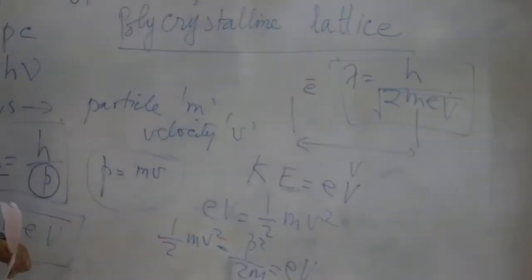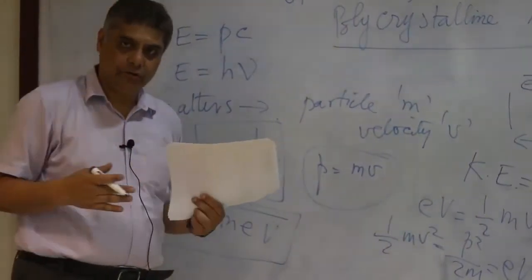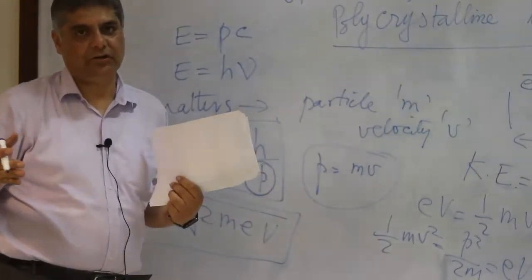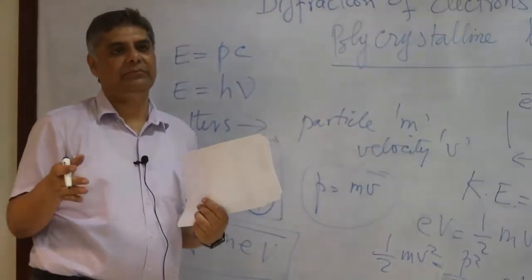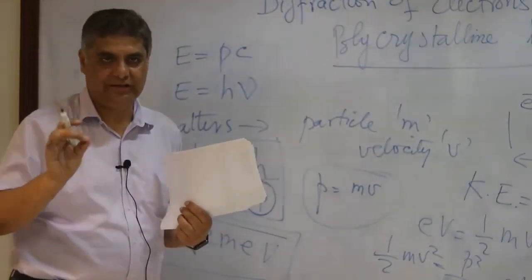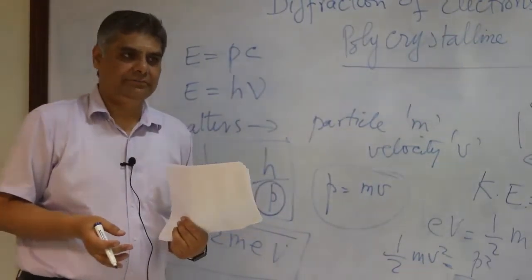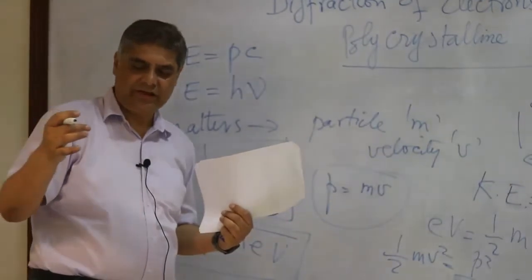This is one part of the experiment. We have a cathode ray tube or electron gun where through thermionic emission we emit electrons. There are few grids in there to focus the electron beam, which we call electron optics.